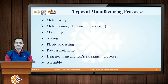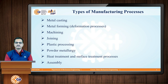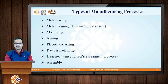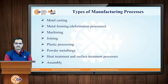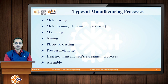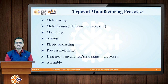After learning the basic definition of manufacturing and identifying its various elements, let us learn what the different types of manufacturing processes are and how we can classify them. The various types listed are: metal casting, metal forming (also called material deformation processes), machining or metal cutting processes, material joining processes, plastic processing, powder metallurgy, heat treatment, surface treatment, and assembly. Out of these, metal casting, metal forming, machining, and joining are called the basic or major manufacturing processes.